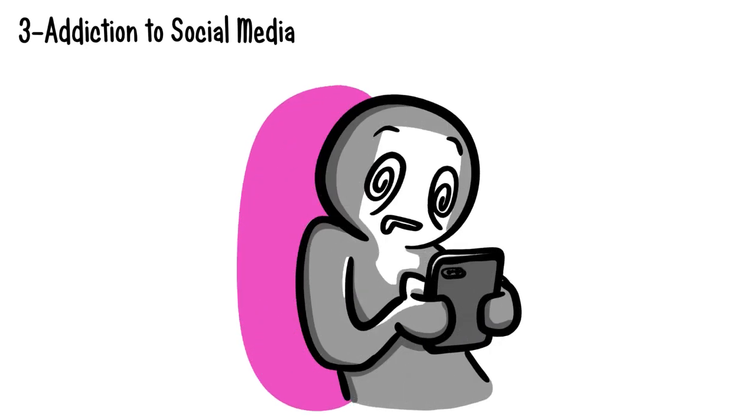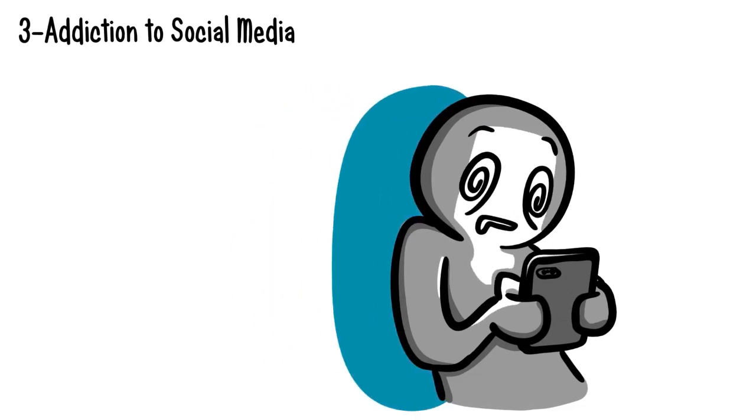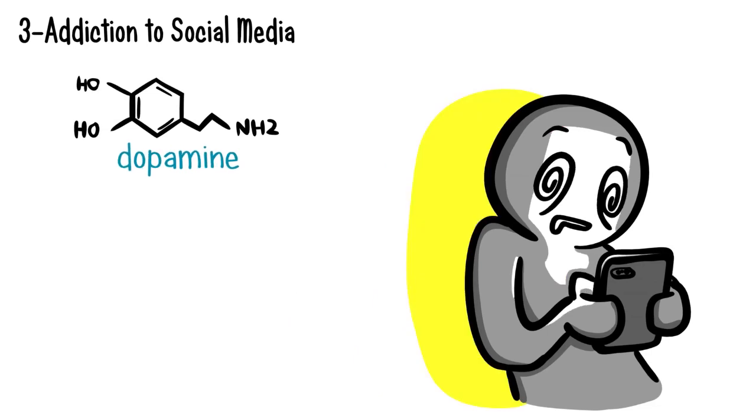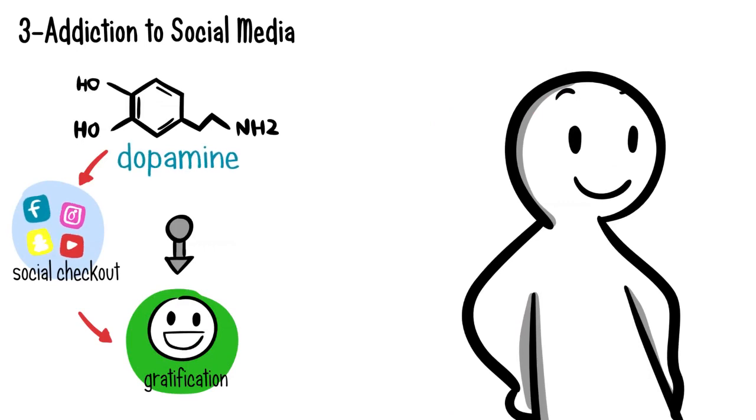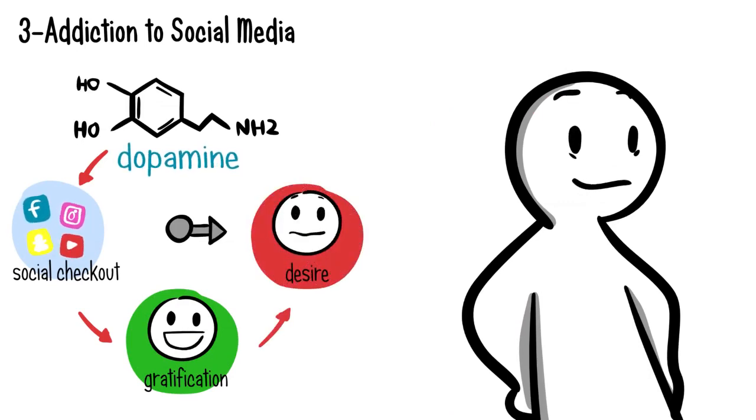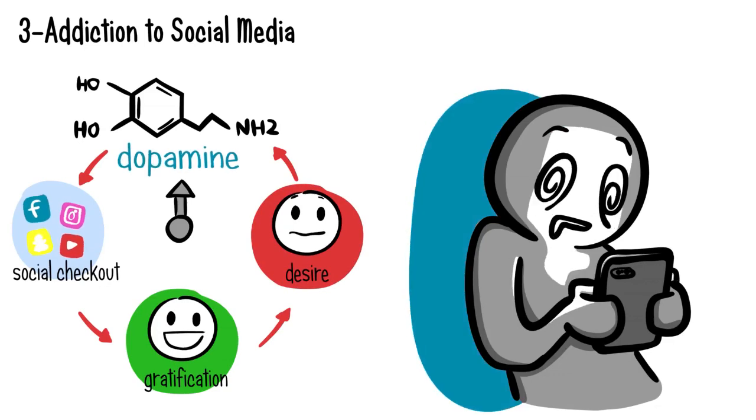Fact number 3. Addiction to social media. Are you addicted to social media? Some of us continuously check out Instagram and other social pages. Dopamine makes you addicted to seeking information. This is a neurotransmitter in the brain that gives you the desire to constantly look for information. Therefore, you will feel gratified when you browse your feed on social media.